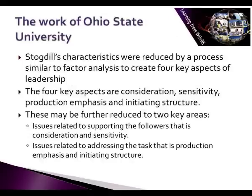Let's delve into Ralph Stogdill's work in a little more detail, looking at the work of Ohio State University. Stogdill's characteristics were reduced by a process similar to factor analysis to create four key aspects of leadership: consideration for people, sensitivity to people and people issues, production emphasis, and initiating structure. These four may be further reduced to two key umbrella areas — issues related to supporting followers, and issues related to addressing the task.